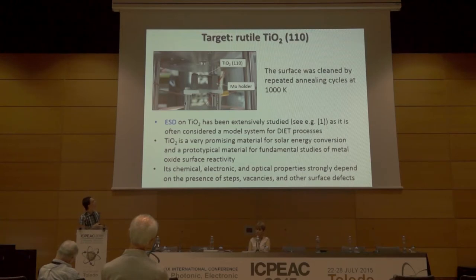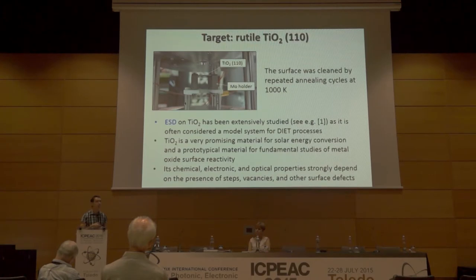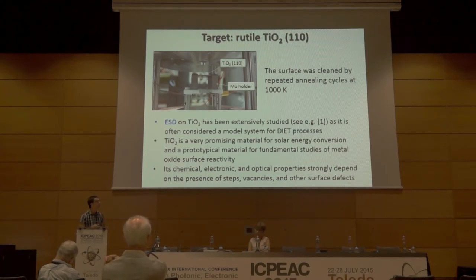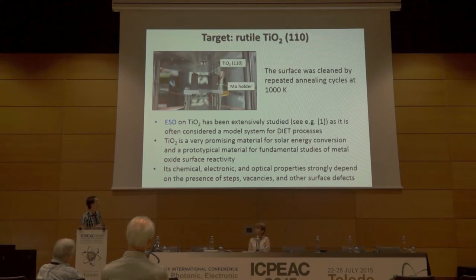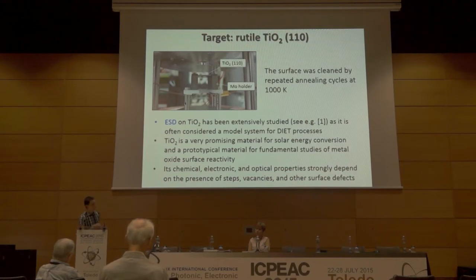TiO2 was chosen because there are many electron-stimulated desorption measurements in the literature — TiO2 is often considered a model system for DIET processes — and also because it is a very promising material for solar energy conversion and a prototypical material for fundamental studies of metal oxide surface reactivity. The chemical, electronic, and optical properties of the surface depend strongly on the presence of steps, vacancies, and other surface defects, making positron and electron-induced ion desorption a very interesting process to understand how the physical properties of the surface change.